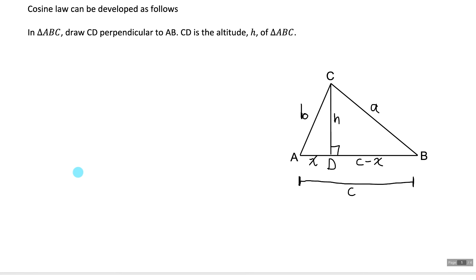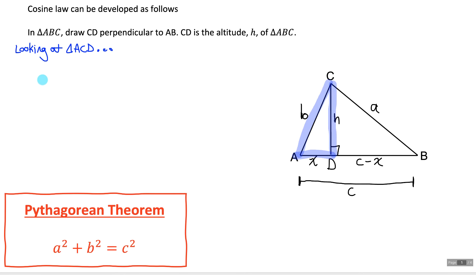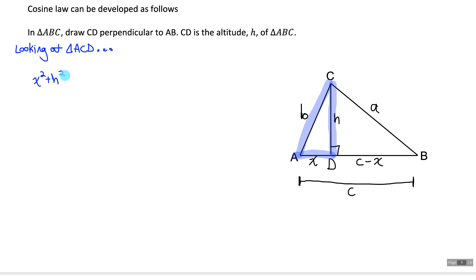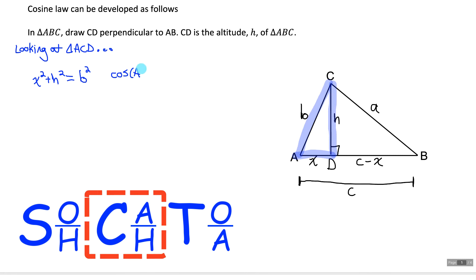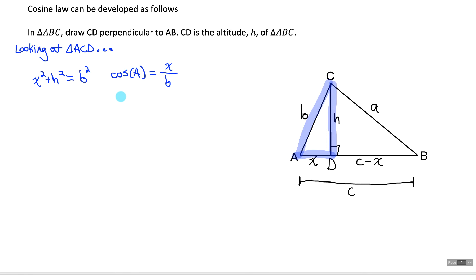Focusing on triangle ACD, which is a right angle triangle, Pythagorean theorem gives us X squared plus H squared equals B squared. Using SOH CAH TOA, cosine of angle A equals adjacent over hypotenuse, so cosine A = X/B, which means X = B·cos A. Now shifting to triangle CDB, also a right angle triangle: (C minus X) squared plus H squared equals A squared. Expanding gives C squared minus 2CX plus X squared plus H squared equals A squared.